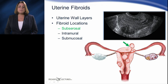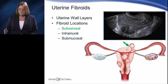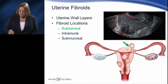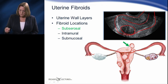Sometimes, subserosal fibroids may be connected to the uterus by a stem or stalk. These are called pedunculated subserosal fibroids. In this image, we see the uterus in an endovaginal image. We see the endometrium, and this is a subserosal fibroid.